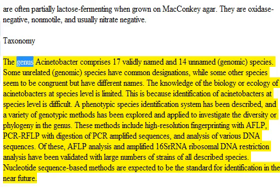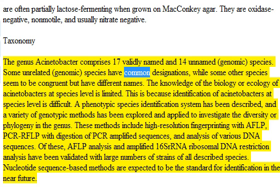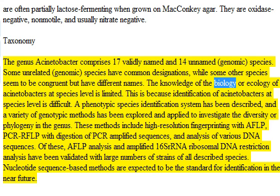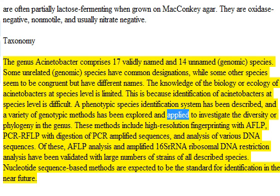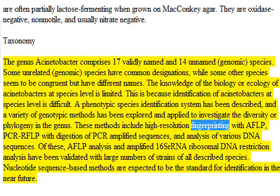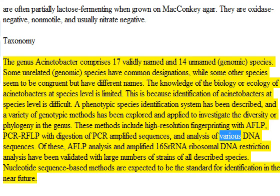Taxonomy: The genus Acinetobacter comprises 17 validly named and 14 unnamed genomic species. Some unrelated genomic species have common designations, while some other species seem to be congruent but have different names. The knowledge of the biology or ecology of Acinetobacters at species level is limited, because identification at species level is difficult. A phenotypic species identification system has been described, and a variety of genotypic methods has been explored and applied to investigate the diversity and phylogeny in the genus. These methods include high-resolution fingerprinting with AFLP, PCR-RFLP with digestion of PCR-amplified sequences, and analysis of various DNA sequences.